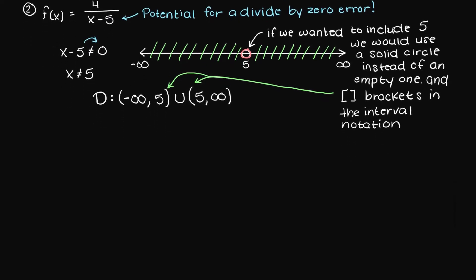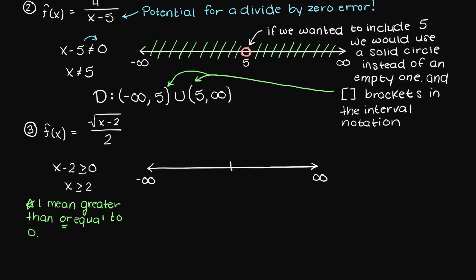The third question states the square root of x minus 2 over 2. Since we have an even root in this function, we need to determine the domain. Again, we write this as an inequality, so we have x minus 2 must be greater than 0. Once solving, we get that x must be greater than 2 to prevent this even root from being negative. So on our number line, we have all x values below 2 as making our function undefined. Writing this answer in interval notation, we have round bracket 2, as we cannot include 2, to positive infinity.